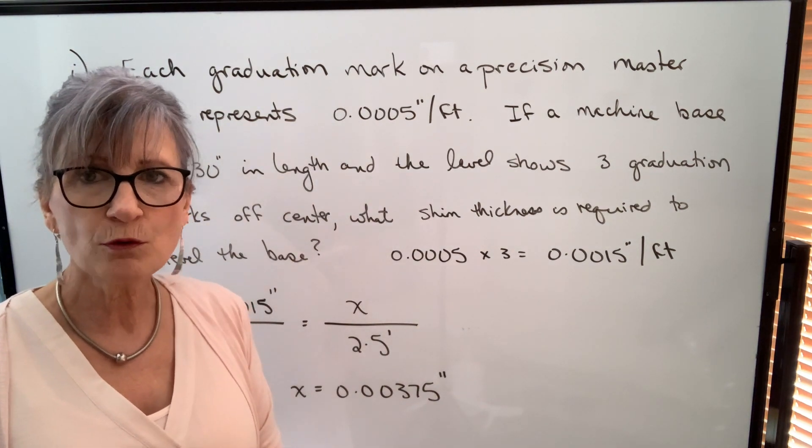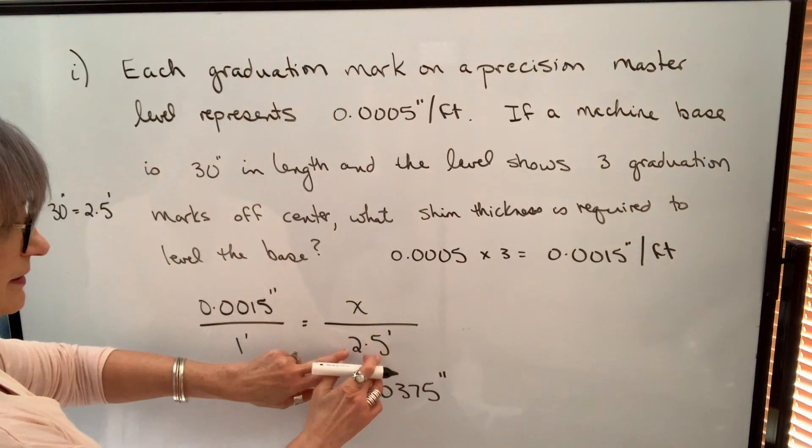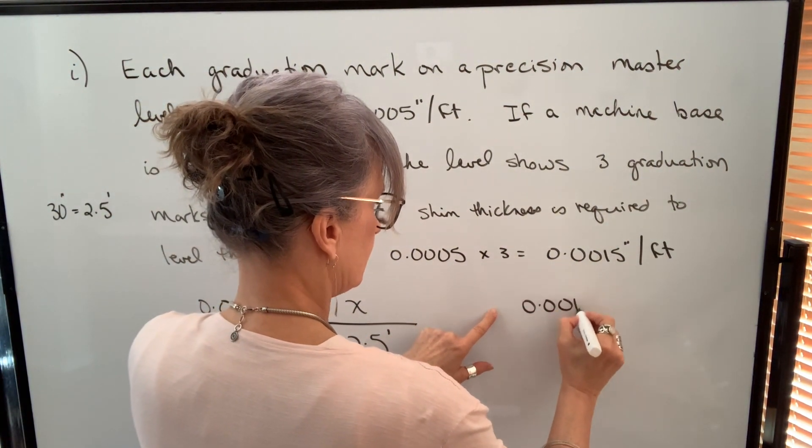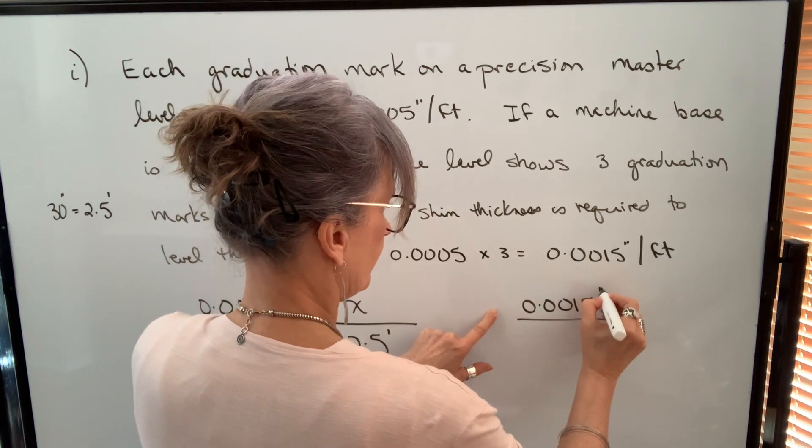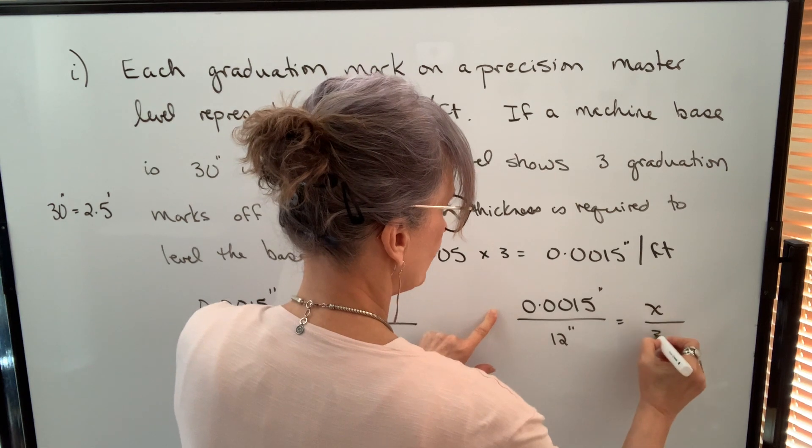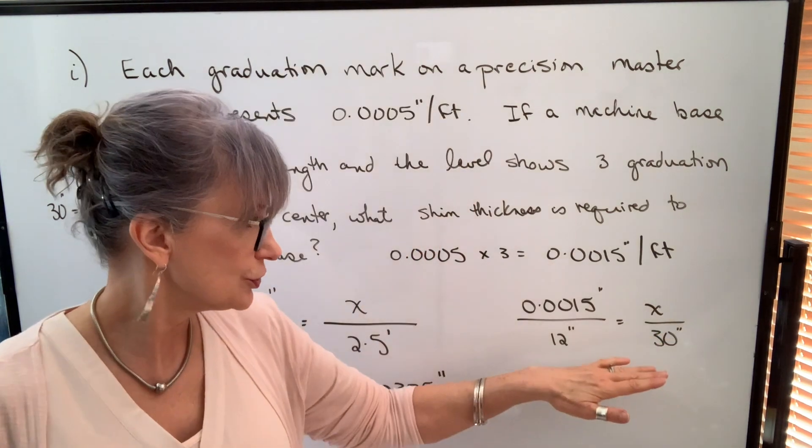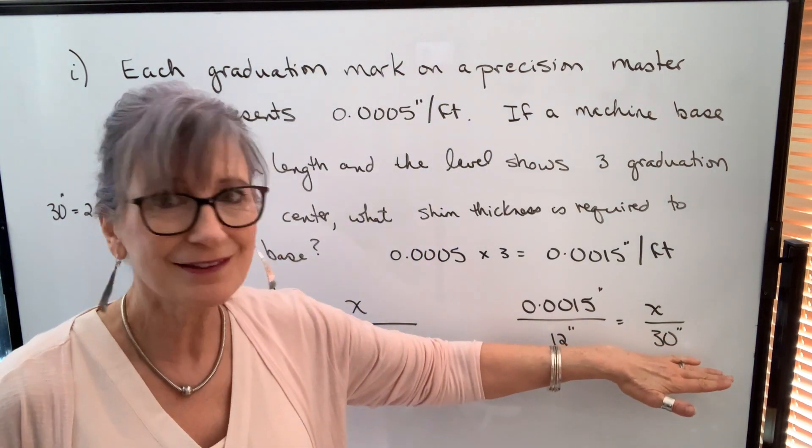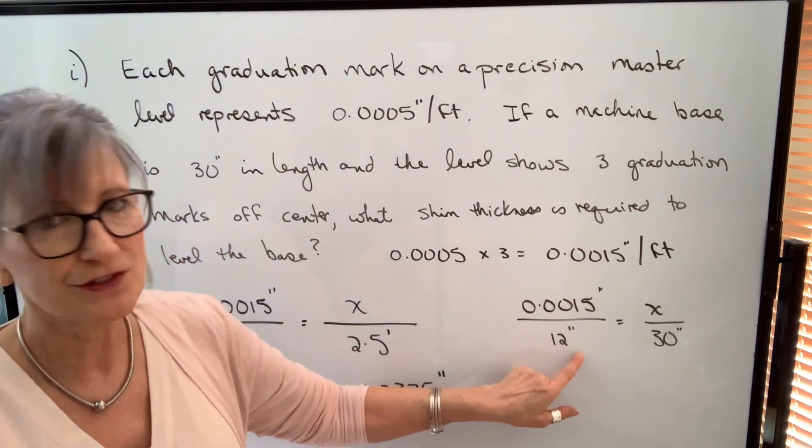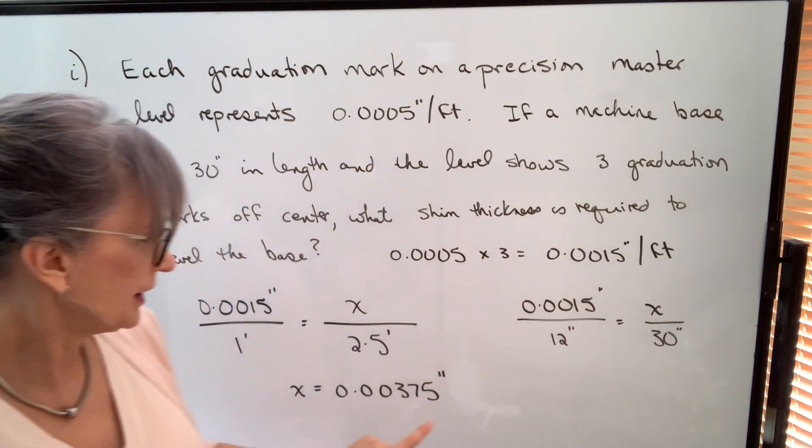We could do this question with our machine base in inches. That's fine. If we did that, we'd have to say the amount of misalignment over 12 inches is how much over 30 inches. You could do it with your machine base length in inches, as long as then you change feet to inches here. If you cross multiply, you'll get the same value.